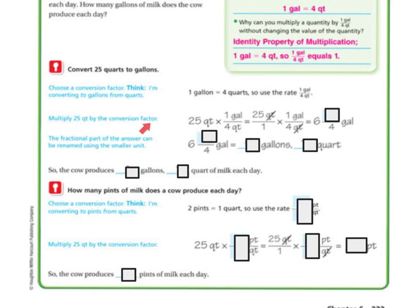Multiply 25 quarts by the conversion factor. So I've got 25 times 1 over 4. Remember, whenever I have a whole number, I just add a 1 to the bottom. So we've got 25 quarts times 1 gallon over 4 quarts. And then what they did is they cross-multiplied.